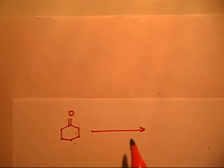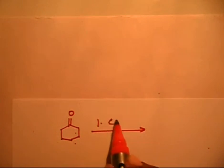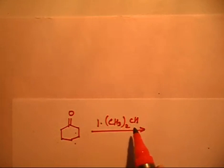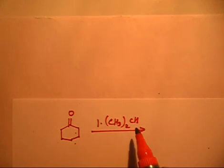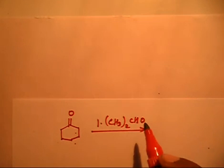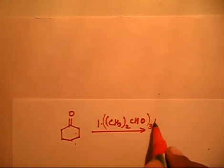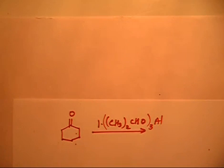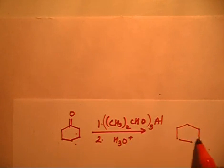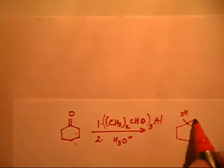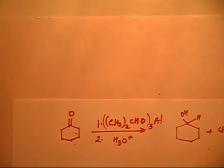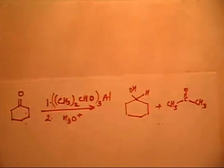This ketone, if treated first with aluminum tri-isopropoxide — written as Al[OCH(CH3)2]3 — and then with H3O+, we will finally get an alcohol product.